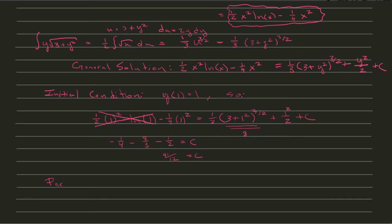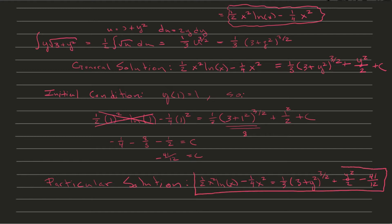Plugging C into our general solution gives the particular solution: (1/2)x² ln(x) minus (1/4)x² equals (1/3)(3 + y²)^(3/2) plus y²/2 minus 41/12. This wraps up the first problem. Make sure to always solve for the constant whenever you have an initial value.